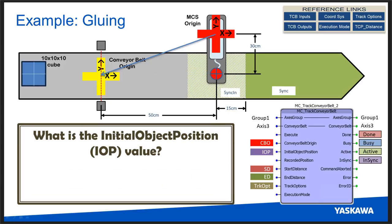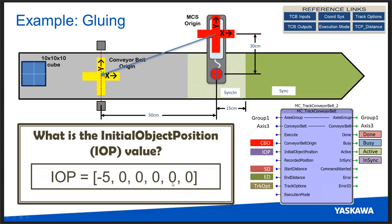Since we don't have a Z axis, our glue nozzle must be directly above the part. For the initial object position: when our cube trips the sensor, that position is recorded. Since the cube is 10 centimeters and we want glue in the center, we offset minus 5 units in the negative X direction. The Z and Y axes don't require offsets here. So our initial object position is minus 5 in X.